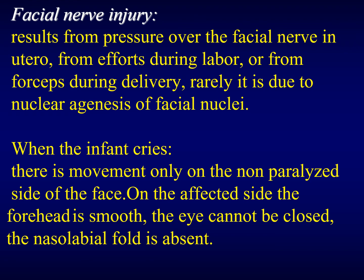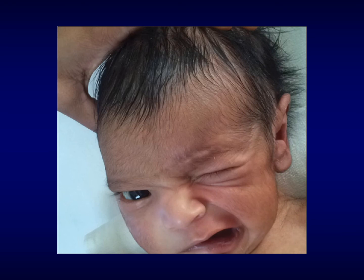Facial nerve injury results from pressure over the facial nerve in utero, from efforts during labor, from forceps during delivery, and is rarely due to nuclear agenesis of the facial nuclei in the brainstem. When the infant cries, there is no movement on the paralyzed side. On the affected side, the forehead is smooth, the eye cannot close completely — what we call lagophthalmos — and the nasolabial fold is absent. The baby cannot close his eye on the affected side, there is no nasolabial fold, and there are no wrinkles on the forehead. This is a case of right-sided facial nerve palsy.